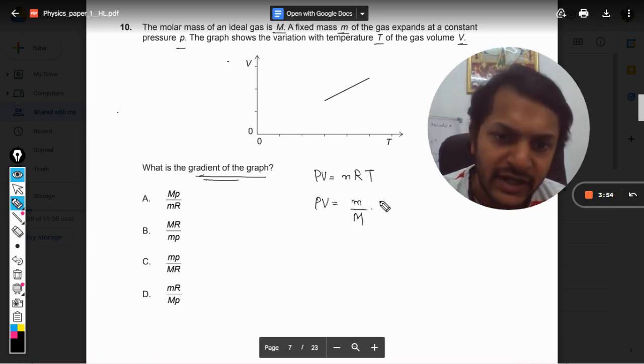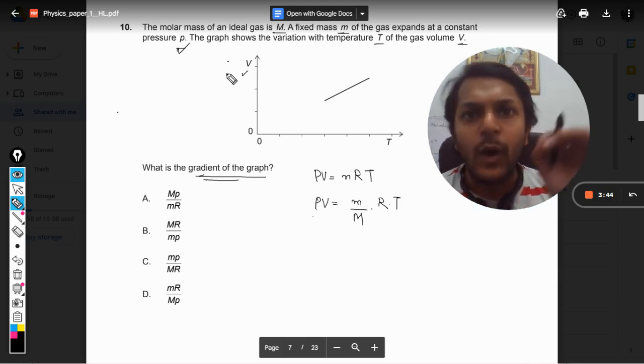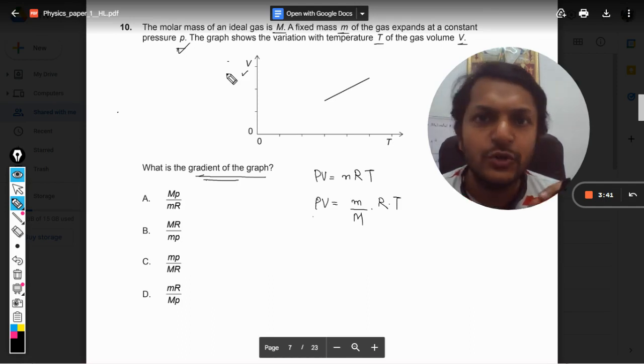It can be written as the number of moles can be written as small m divided by capital M into R into T. Now pressure is constant, so P is constant. And because V is taken on Y axis, so I am substituting V as Y just for the clarification.